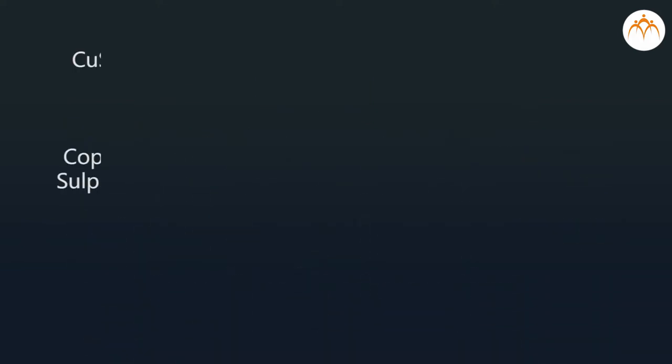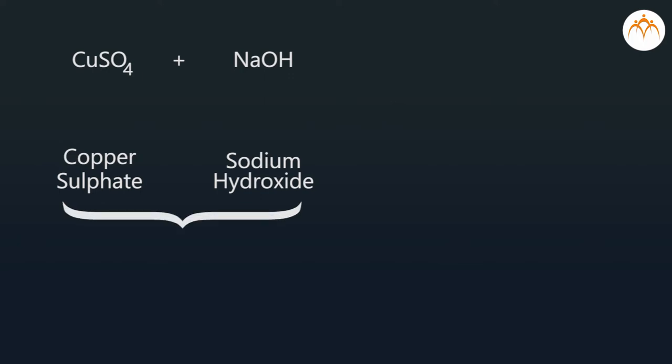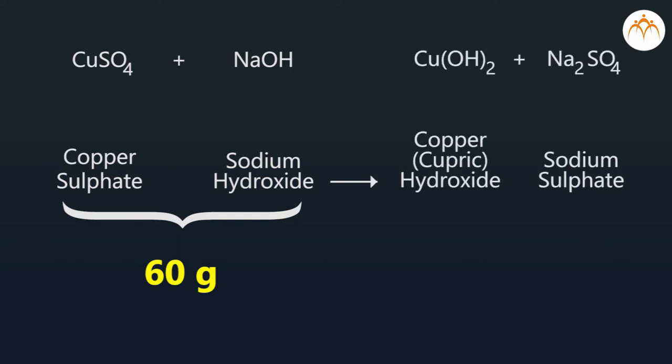Example: reactants are copper sulfate and sodium hydroxide. The total mass of the reactants is 60 gram. And after completion of the reaction, copper hydroxide and sodium sulfate will form. The total mass of the products will be 60 gram. It means there is no loss or gain of mass during chemical reaction.